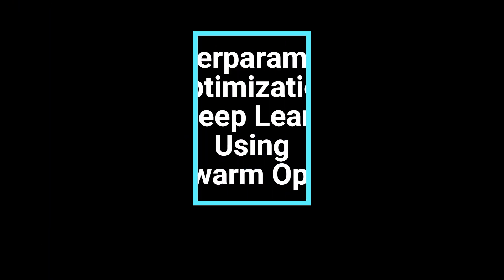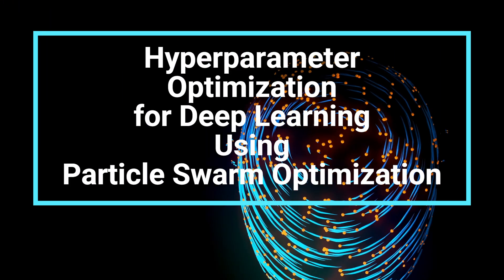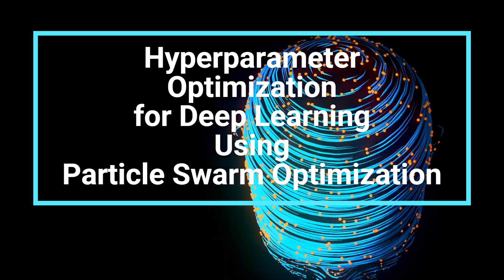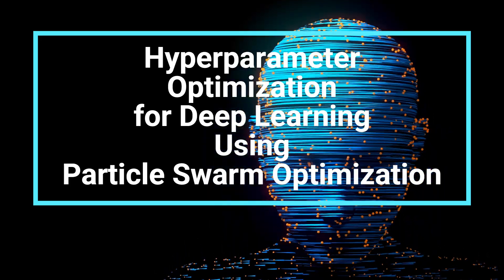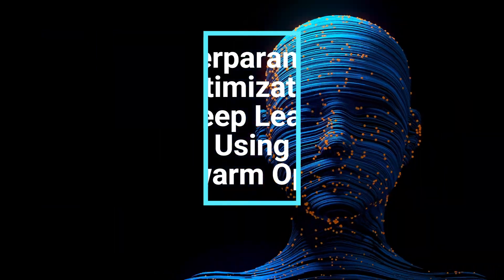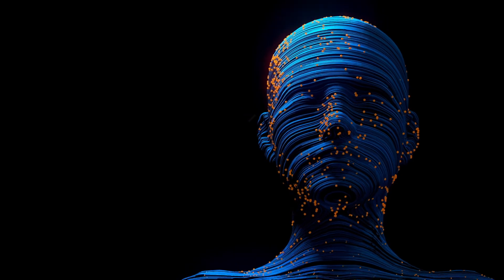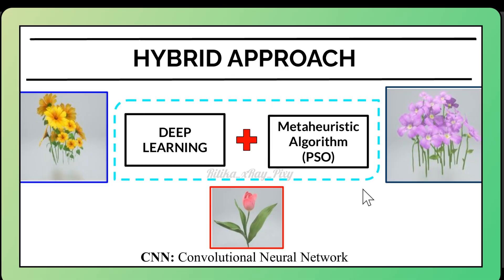In this video we will discuss a real life example that is hyper parameter optimization for deep learning using particle swarm optimization. Here we will create a hybrid approach by combining deep learning with the meta-heuristic algorithm that is PSO. We will build and train a CNN for image classification.